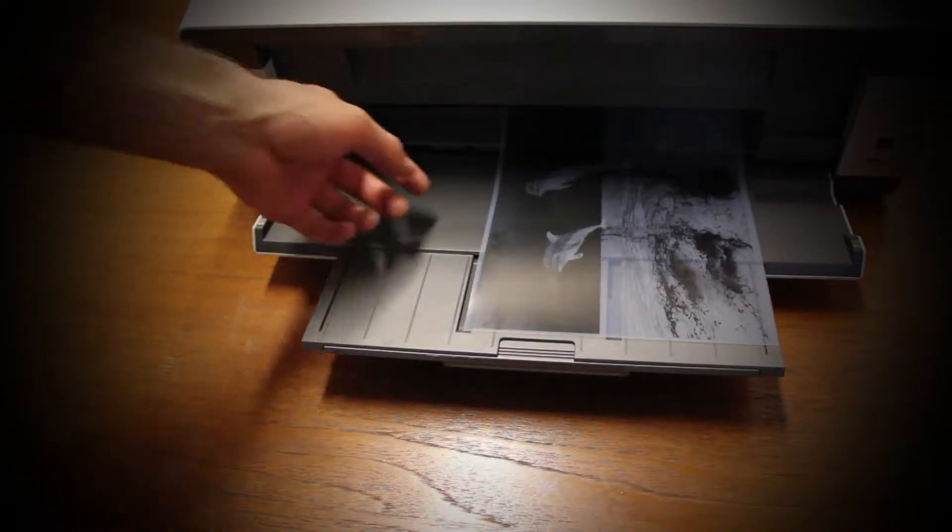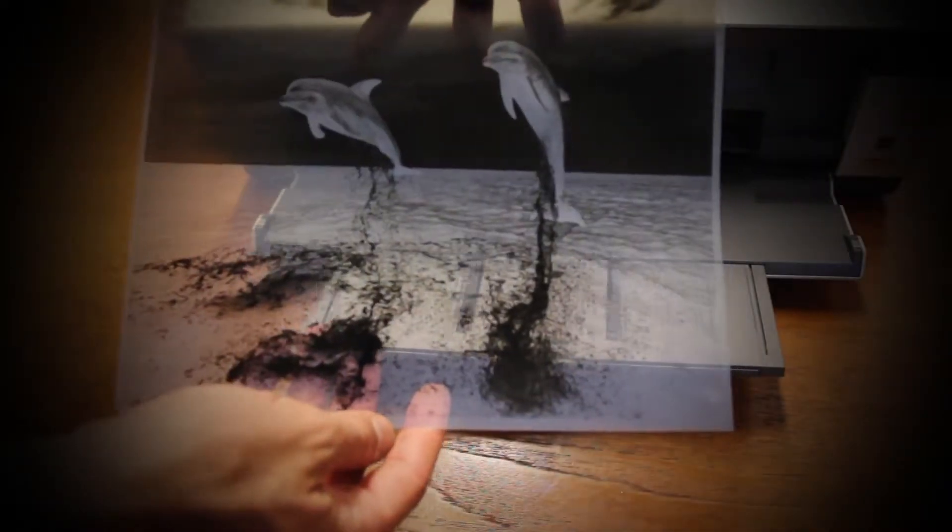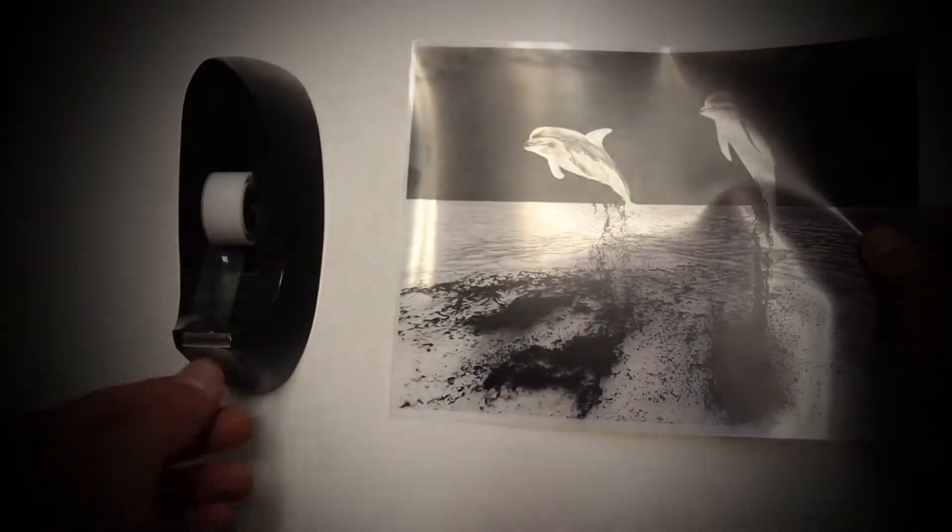Your negative should be completely opaque in its darkest areas. If it's not, adjust your printer settings, run your film through a second time, or double up two negatives.